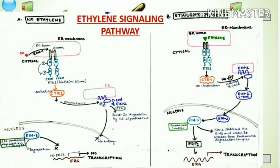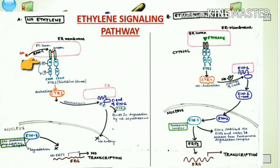RAN1, the copper ion transporter, transports copper to the surface of the receptor. After copper binds to the receptor, the histidine kinase of ETR1 is autophosphorylated, and after autophosphorylation it phosphorylates the receiver domain of the receptor — the D representing the aspartate amino acid. After the phosphorylation event, as you can see from the figure, they activate the CTR1 protein.